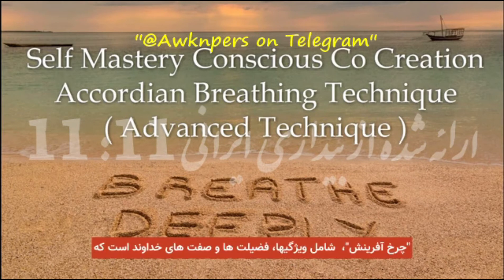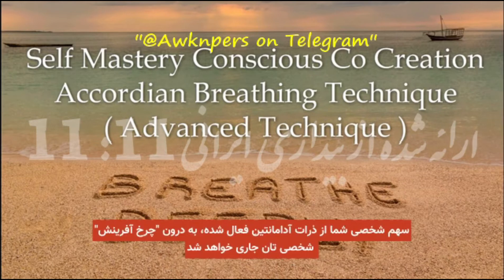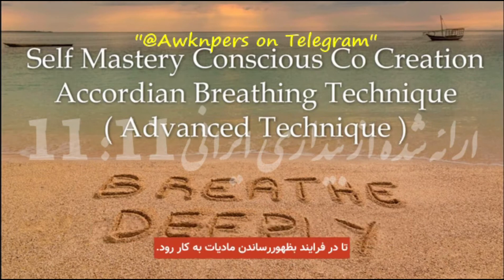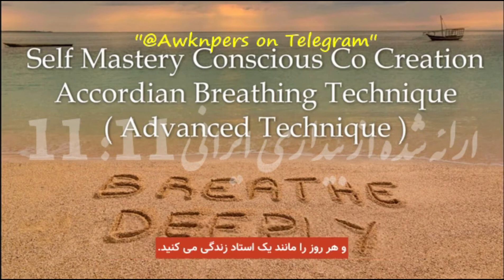This personal wheel of creation contains the qualities, virtues, and attributes of God consciousness you will need as a co-creator of love, joy, harmony, and abundance. Your personal allotment of activated adamantian particles will flow out into your personal creator wheel to be used in the material manifestation process. Having these God particles readily available accelerates the process of manifesting that which you have envisioned via the Universal Laws of Manifestation process and the living each day as a master technique.